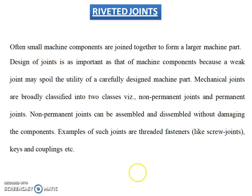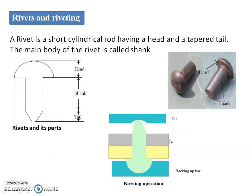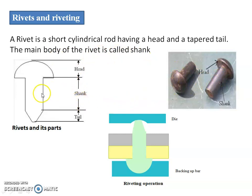If we talk about riveted joints, a rivet is a short cylindrical rod having a head and a tapered tail. The main body of the rivet is called the shank. These are all parts of a rivet.